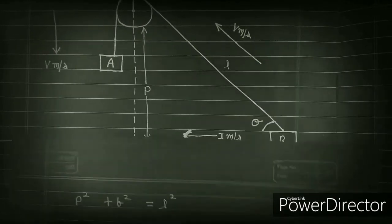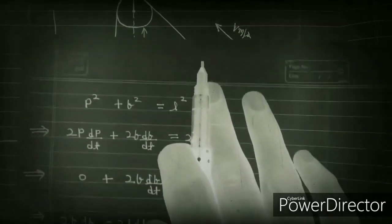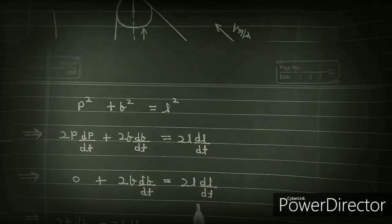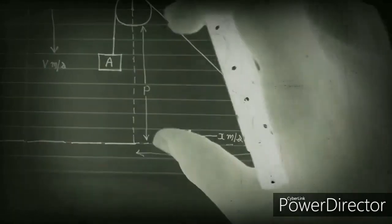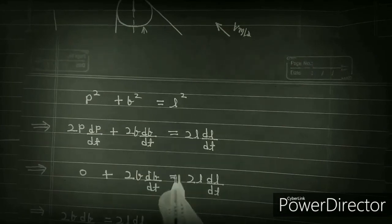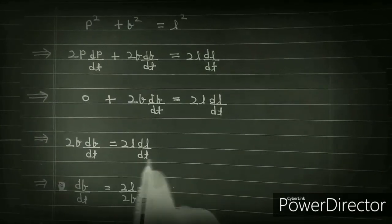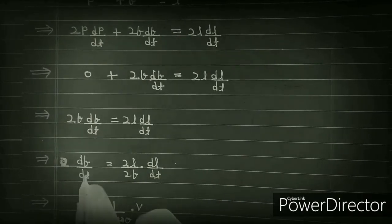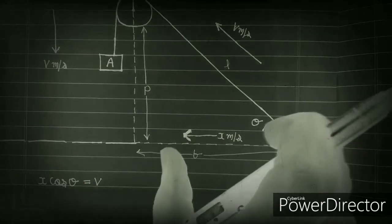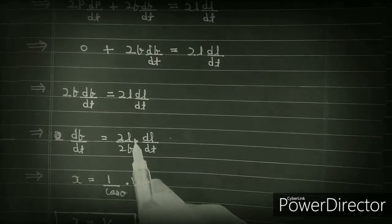So p² + b² = l². Now taking the derivative with respect to time: 2p·(dp/dt) + 2b·(db/dt) = 2l·(dl/dt). Now, dp/dt will be 0 because this height is constant. So this gives us: 2b·(db/dt) = 2l·(dl/dt).